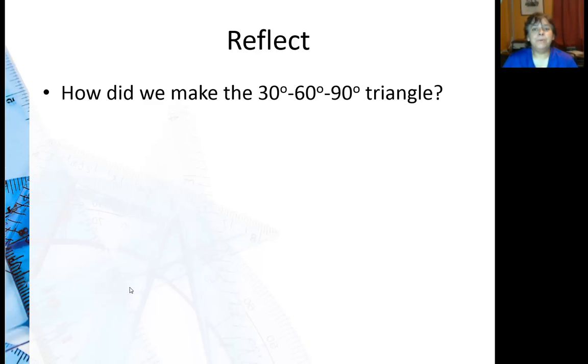So for further reflection, how did we make the 30-60-90 triangle? We started with the square for the 45-45-90. What did we start with for the 30-60-90? And by the way, which is bigger, 2 or square root of 3?